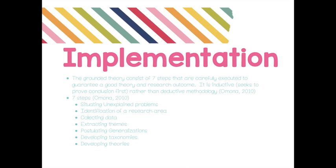There are seven steps that are carefully executed. Grounded theory is more on the inductive side — it proves the conclusion first rather than using the deductive methodology. It does use both inductive and deductive, but inductive comes first. The seven steps are: situating unexplained problems, identification of a research area, collecting data, extracting themes, postulating generalizations, developing taxonomies, and developing theories.